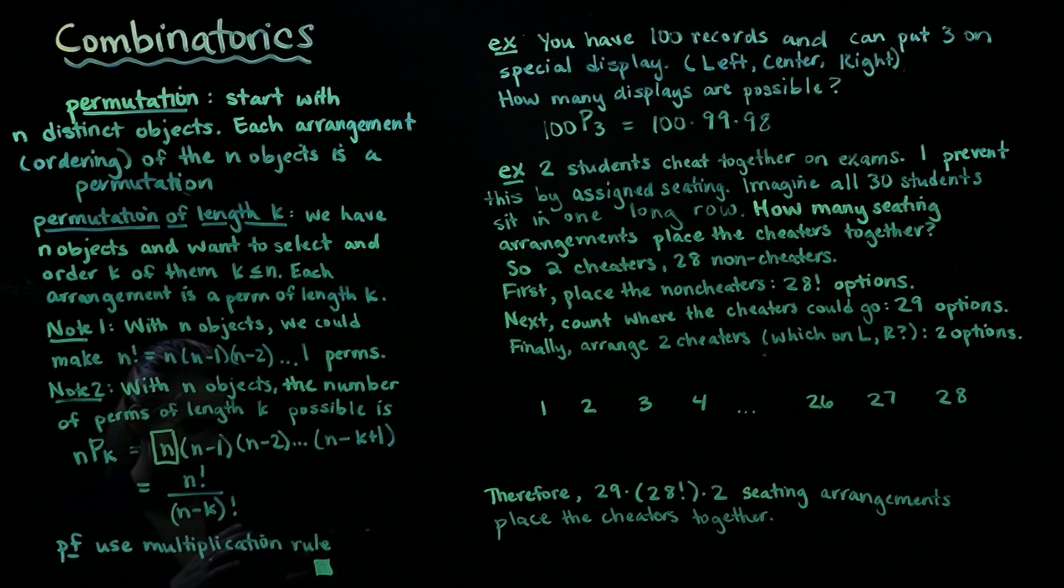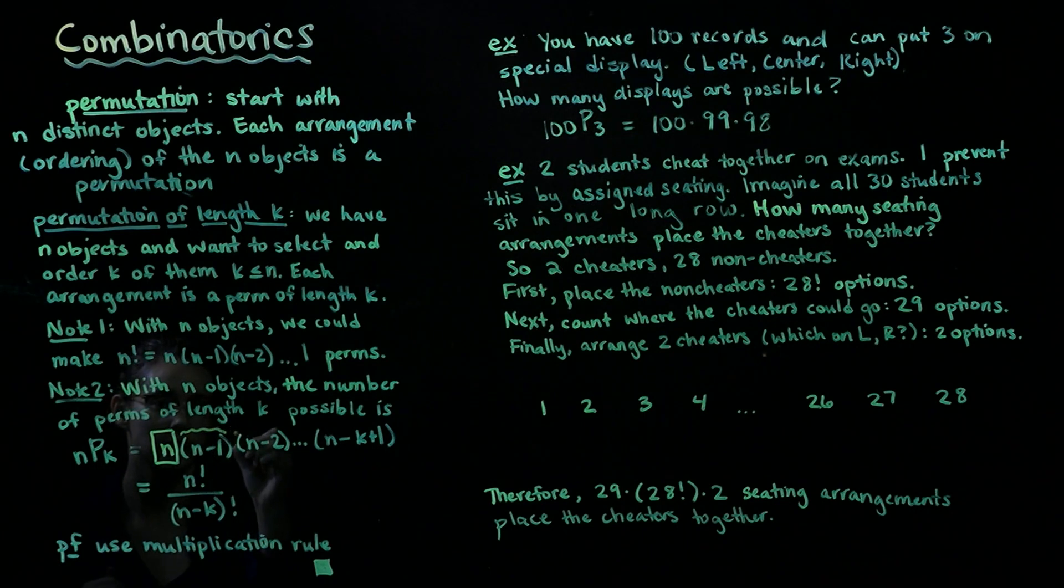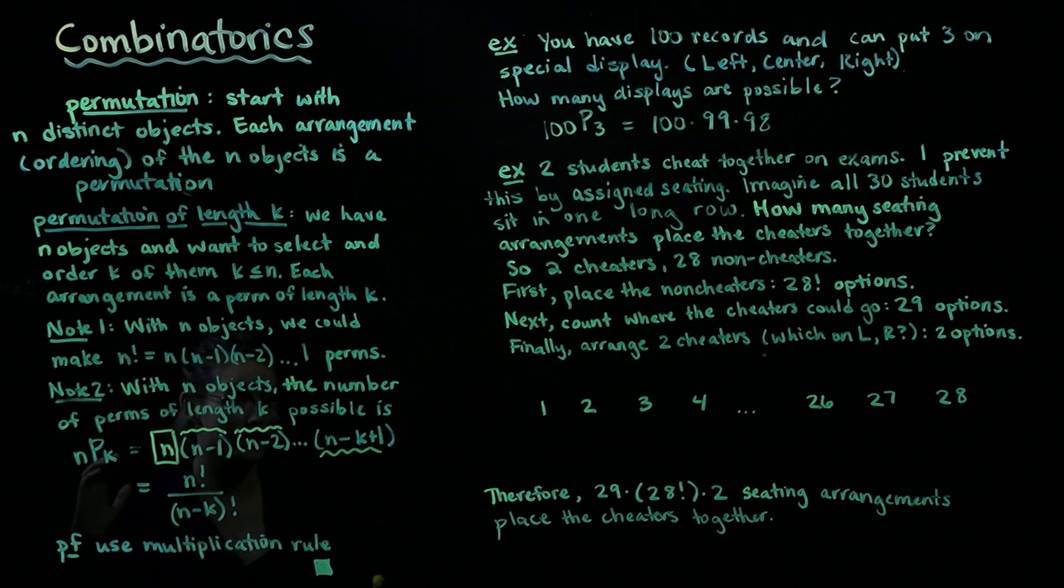Now we've placed one and we have n minus 1 things left. That means there are n minus 1 different choices we could make to put in the second slot. Similarly when we get to the third slot, there are n minus 2 objects left, so we have n minus 2 options. And then finally when we get to this last, or in other words k-th spot, then we have n minus k plus 1 different options. So that's our little proof and intuition for why this is true.